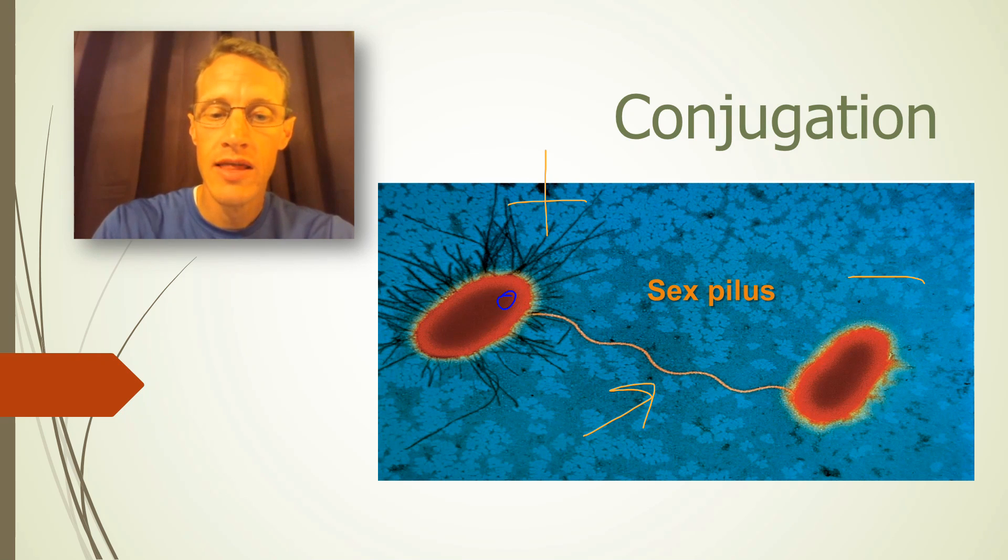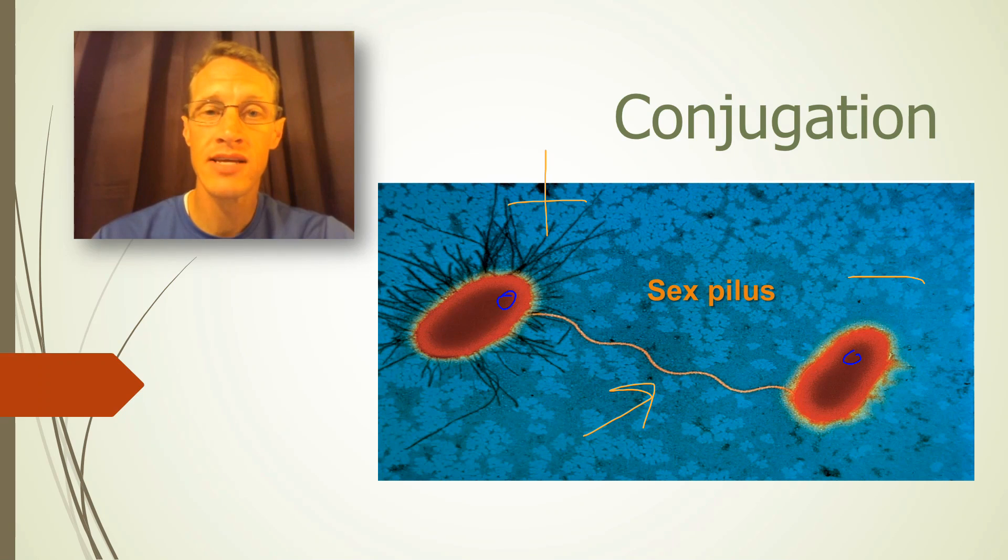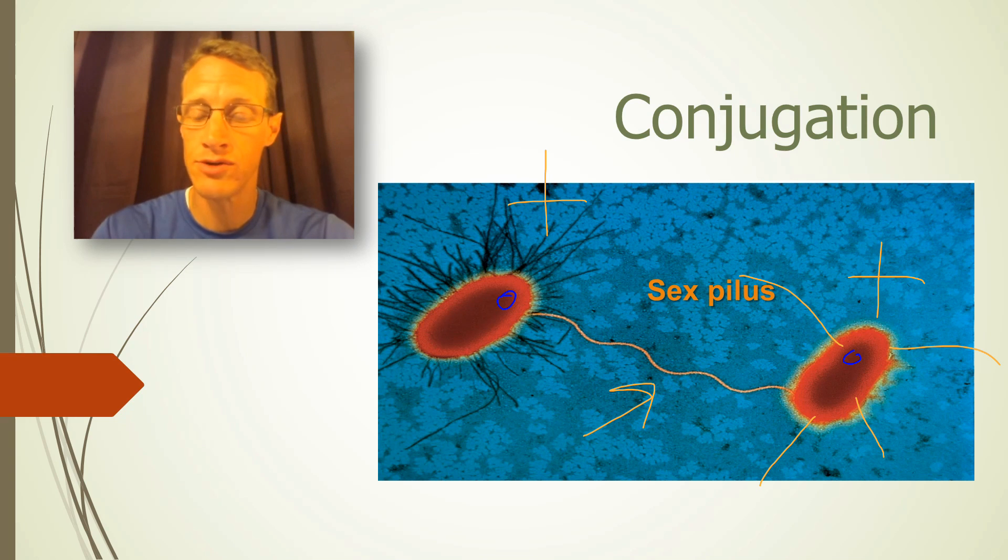And through that tube, the PLUS bacteria can send copies of its plasmids to the MINUS bacteria. And these plasmids can contain genes for things like the ability to make sexpilli, which will change this one from a MINUS into a PLUS. But the plasmids can also contain genes for other traits like antibiotic resistance.